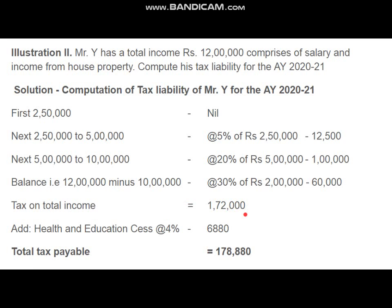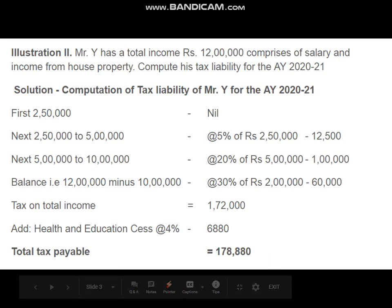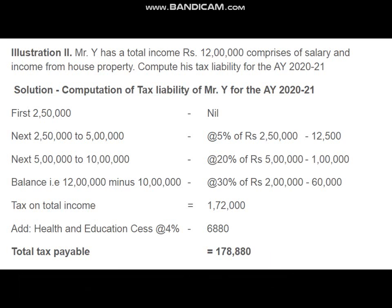To this tax we add health and education cess at the rate of 4 percent. That is 4 percent of 1 lakh 72,000, which is 6,880. So the total tax payable by Mr. Y is 1 lakh 78,880. Through this problem you understood about the slab rate of tax as well as the health and education cess on income tax.